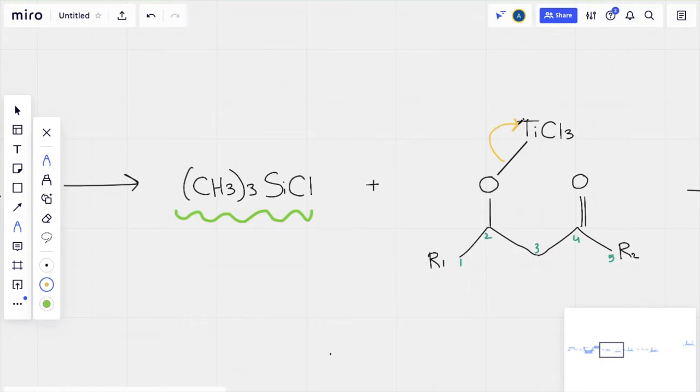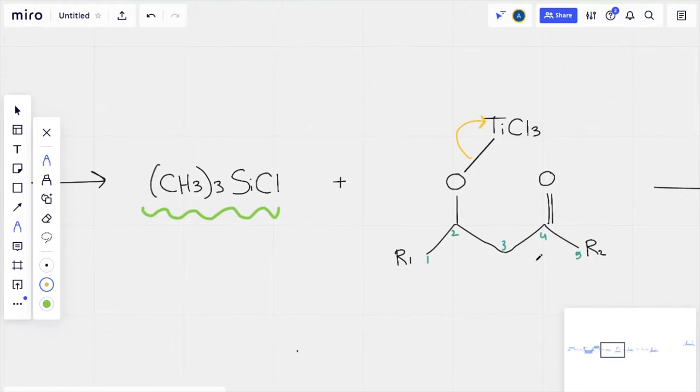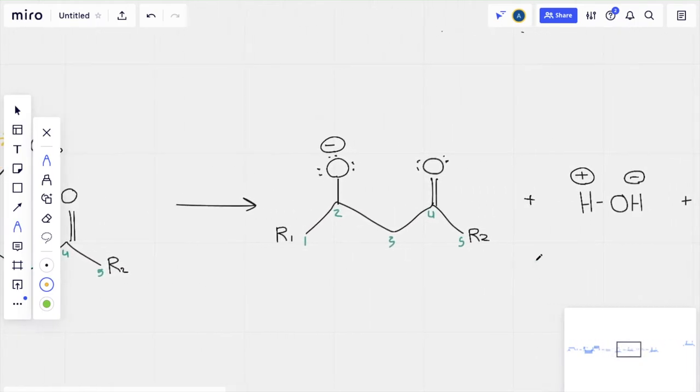So what happens in this step is the bond between oxygen and the Lewis acid breaks. And that is all that happens in this step. What was our silicon enolate and our aldehyde are now together at carbon 3.